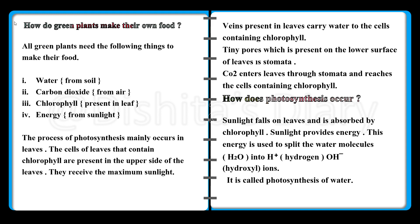Veins present in the leaves carry water to the cells containing chlorophyll. Tiny pores present on the lower surface of the leaf are called stomata. CO2 (carbon dioxide) enters the leaf through stomata and reaches the cells containing chlorophyll.